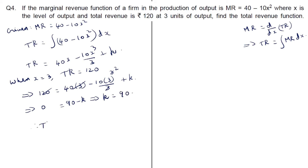Therefore total revenue equals 40x minus 10x cubed by 3 plus 90. For 2 marks, up to the integration step carries 1 mark and the final answer carries 1 mark.